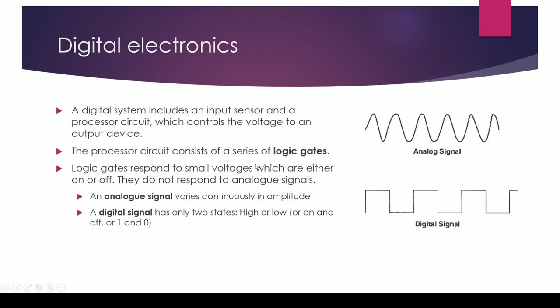These logic gates respond to small voltages which are either on or off. They're digital signals. They do not respond to analog signals. The difference between an analog signal and a digital signal is that an analog signal varies continuously in amplitude, whereas a digital signal only has two states.